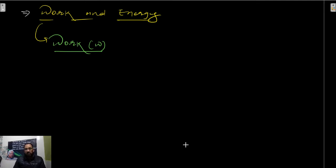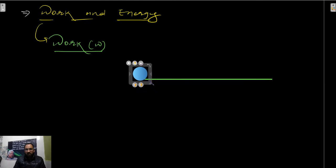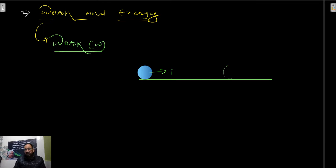Let me give you an example. Suppose this is a straight path and there is an object. Some force is applied on the object - let that force be F. Suppose the object is displaced up to another position. Let this be position A and this be position B. The displacement from A to B, dear children, will be S.